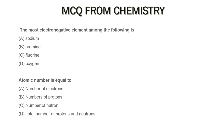Answer Option C: Fluorine. Atomic number is equal to the number of protons. Out of the given substances, the substance made only from carbon is...